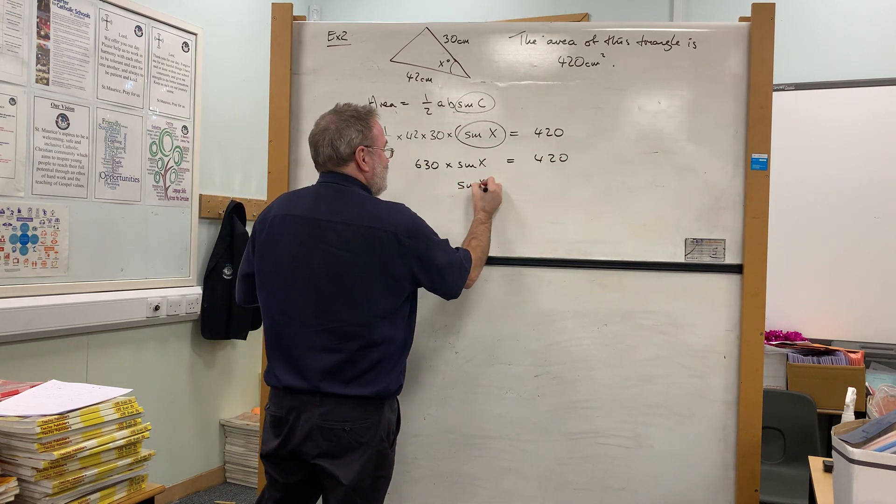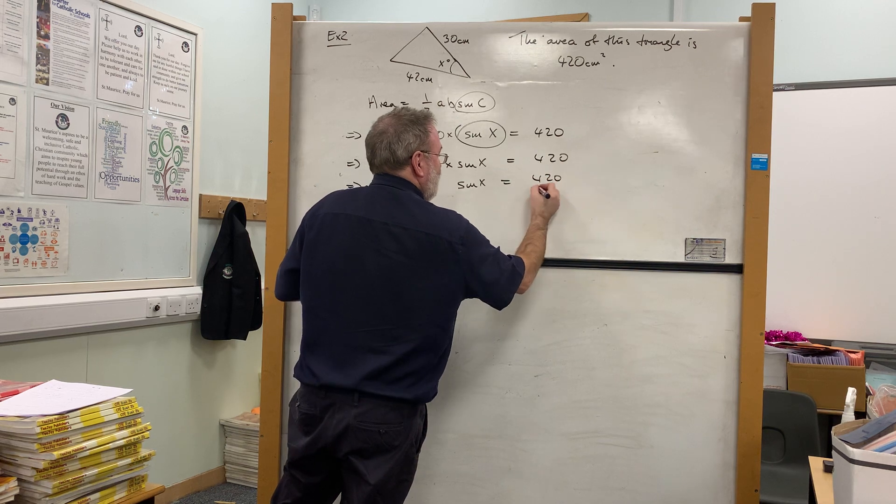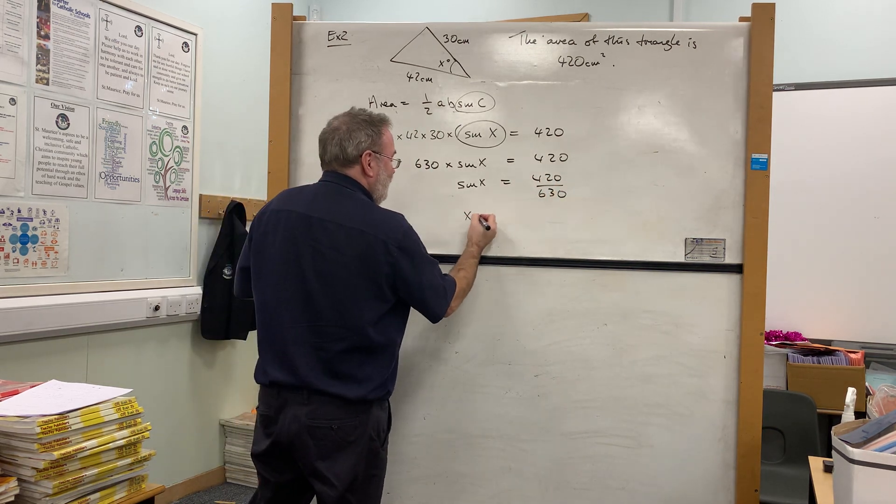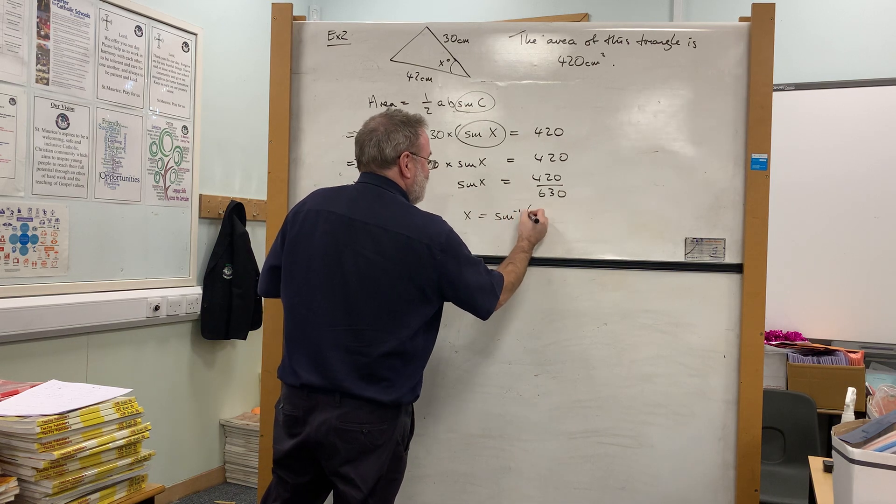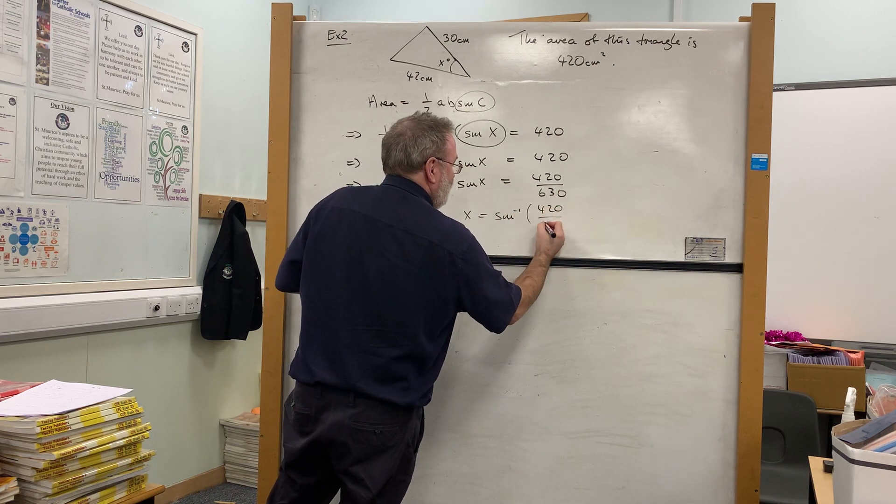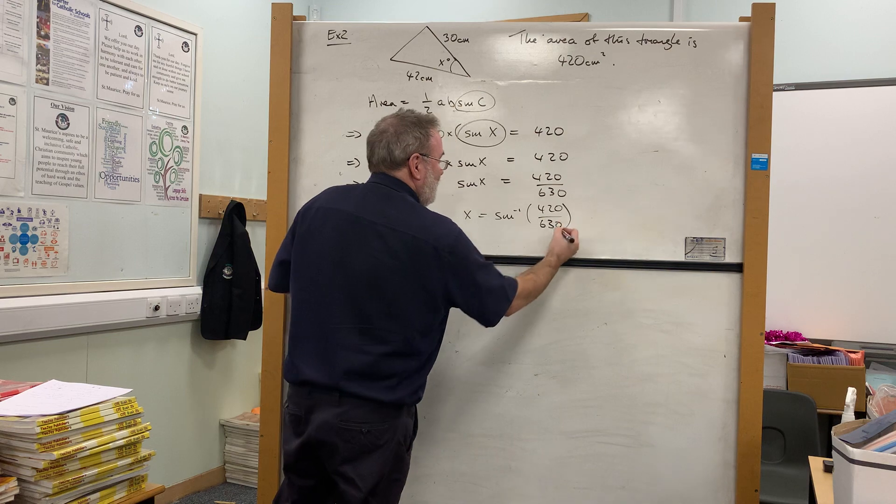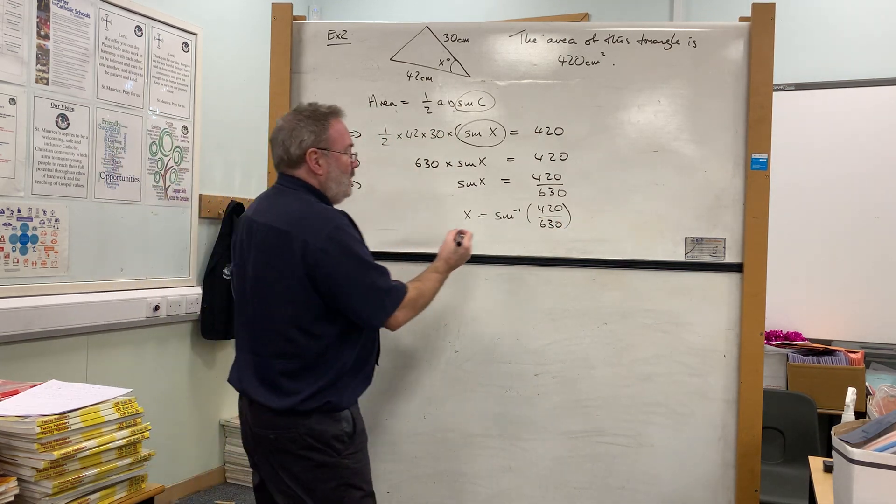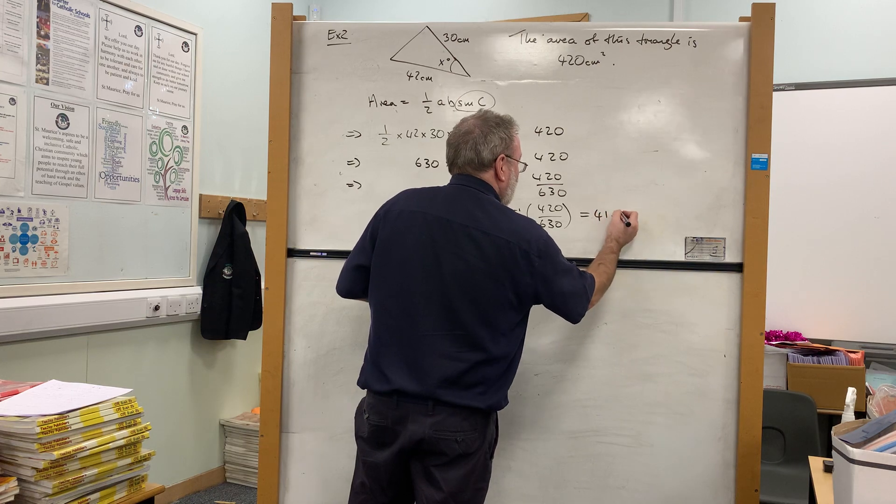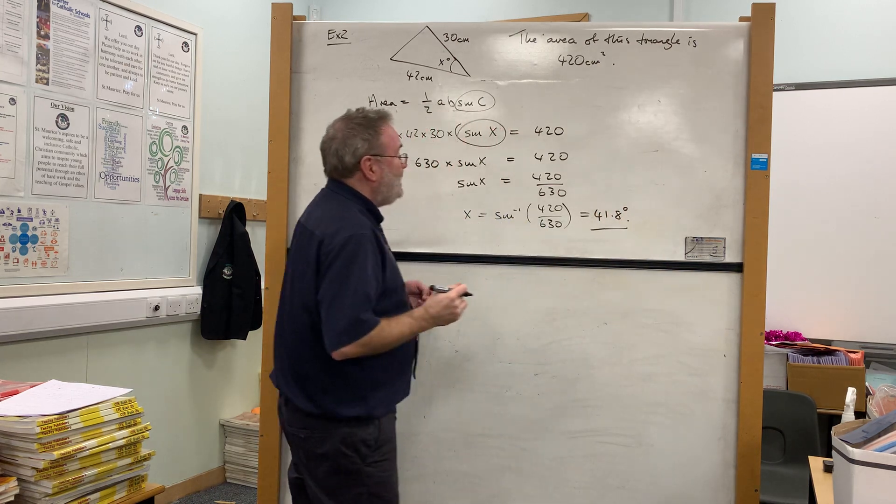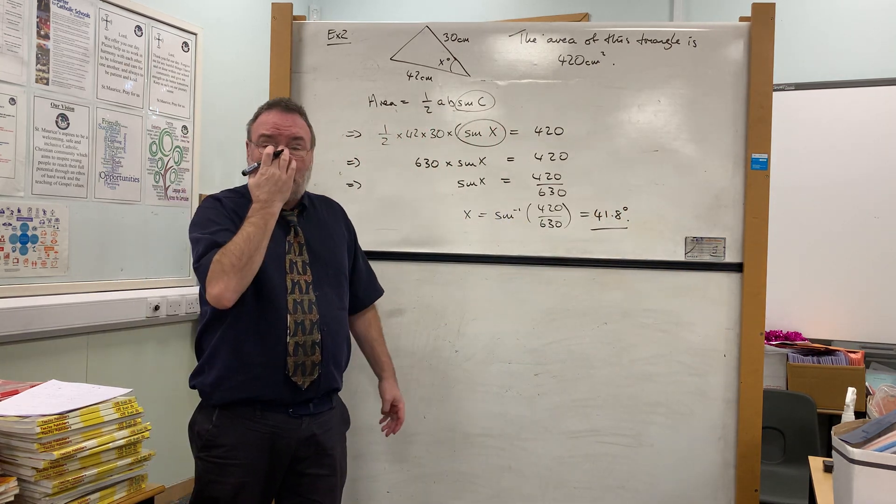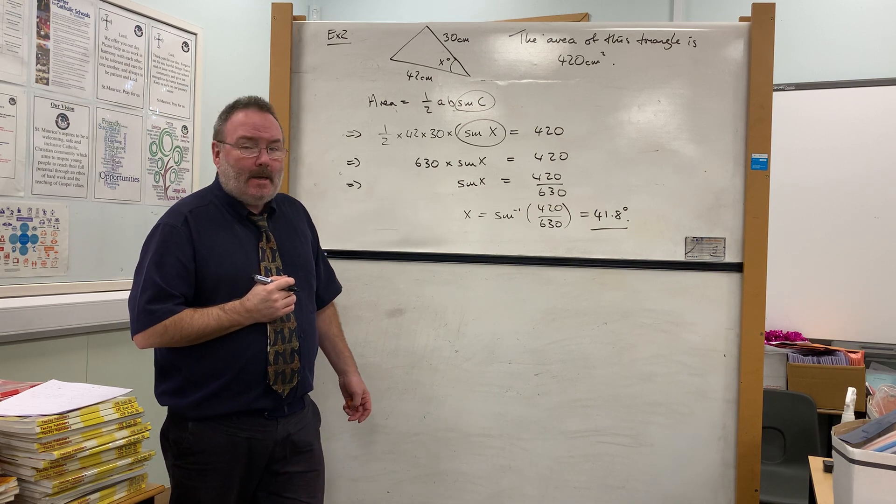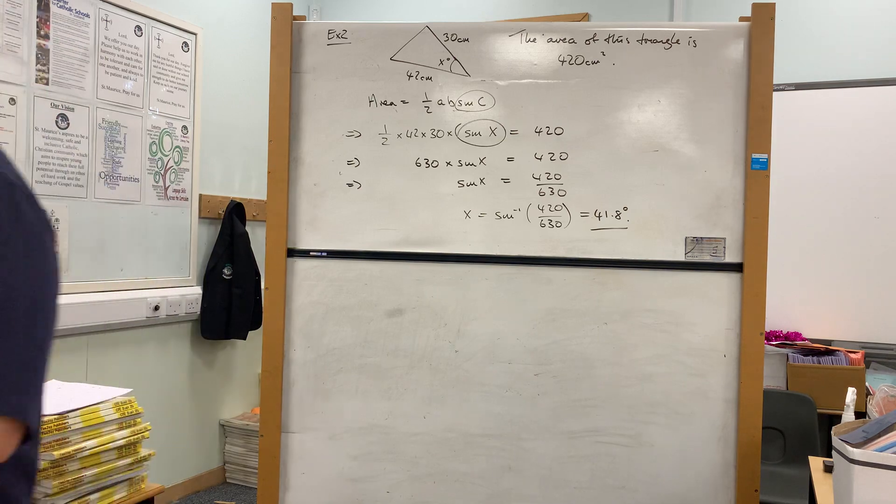So that of course means that sine x equals 420 divided by 630. And at that point we just type in sine inverse, 420 over 630, and that will give us an answer of 41.8. Now as I said, that's more likely to be an exam type question, but it's not especially difficult.